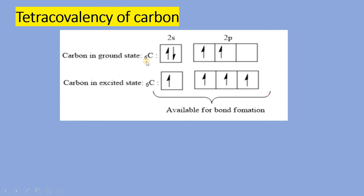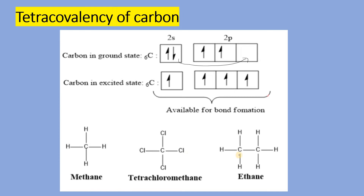The most important constituent of organic compounds is carbon. Now we study the tetravalency of carbon. Carbon's atomic number is 6. The outer electronic configuration of carbon in ground state is 2s2 and 2p2. In the excited state, the electron of 2s gets excited to the empty orbital of 2p so that now there are four unpaired electrons available for bond formation. Therefore, carbon forms four covalent bonds — that is why compounds of carbon are tetravalent.